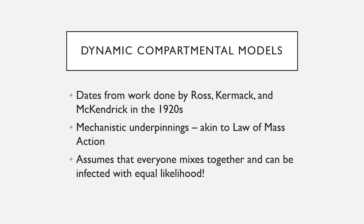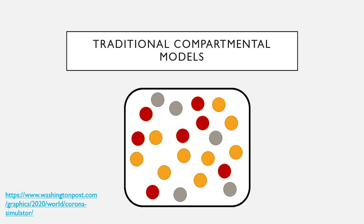The processes that allow us to predict spread are based on an idea often called the law of mass action — that is, everyone is mixing together randomly, and we assume there is an equal likelihood that any individual can get infected. We know this isn't necessarily true, but it's a really great starting point to understand disease spread. A good analogy comes from the ideal gas law, where we might consider individuals like gas particles that randomly bump into one another.